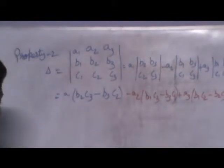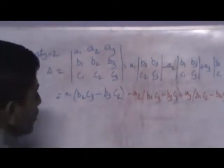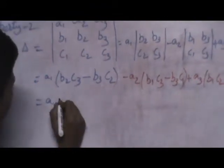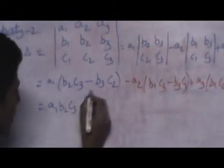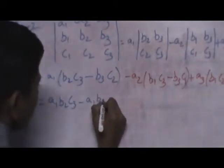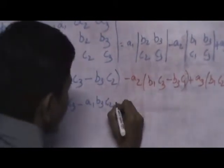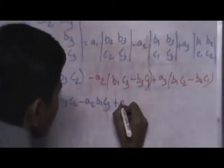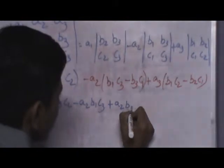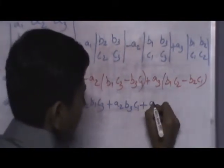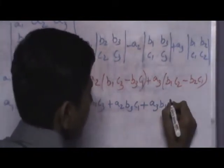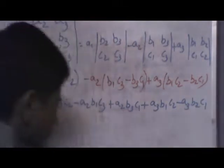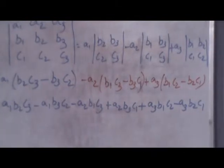Then, multiply A1 along the brackets respectively. A1 B2 C3 minus A1 B3 C2, minus A2 B1 C3 plus A2 B3 C1, plus A3 B1 C2 minus A3 B2 C1. What this says is,